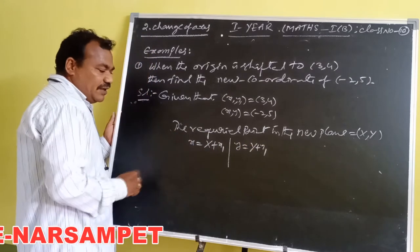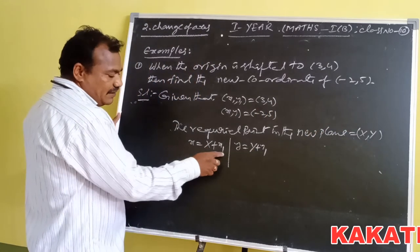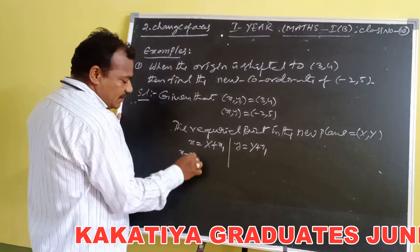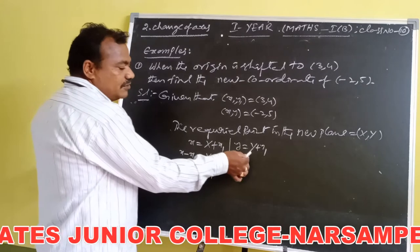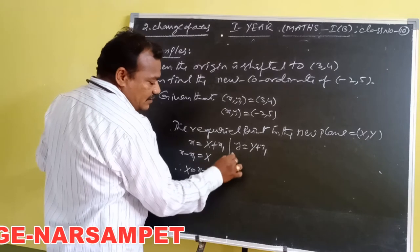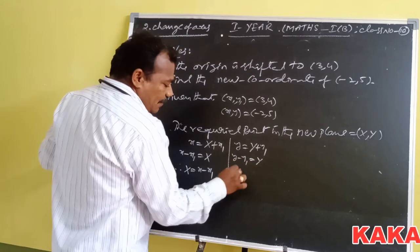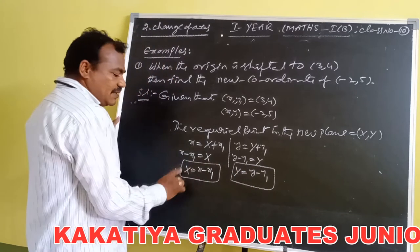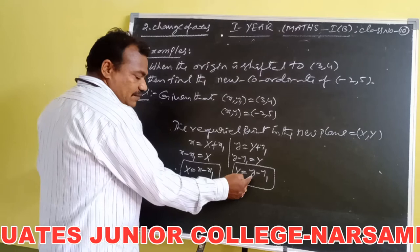We have to find out capital X and capital Y. From the relation, transferring x₁ to the LHS side: capital X is equal to x minus x₁. Similarly, capital Y is equal to y minus y₁. This is the formula for finding capital X and capital Y. We know small x, x₁, small y, and y₁ from the given data.